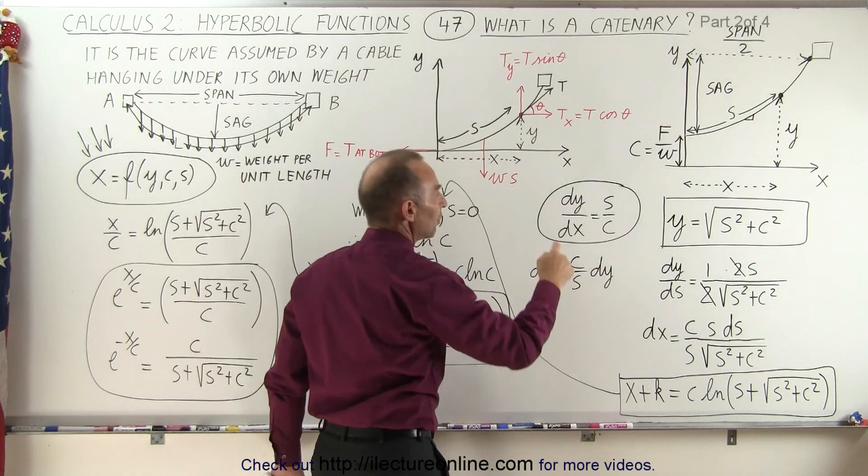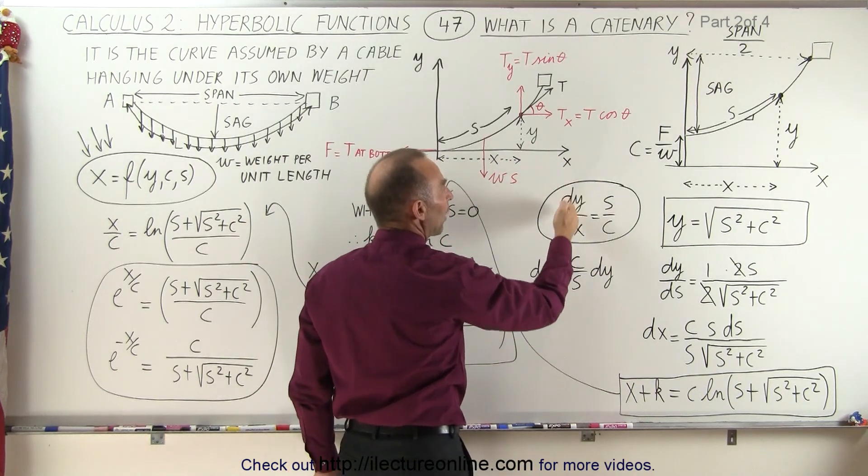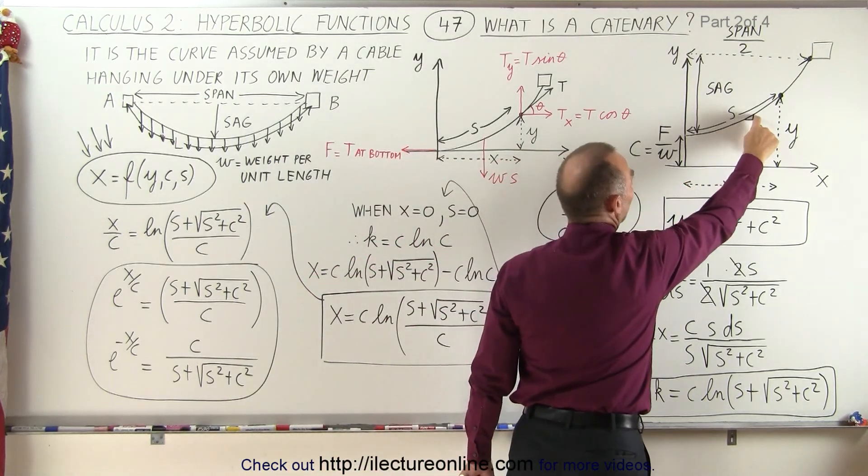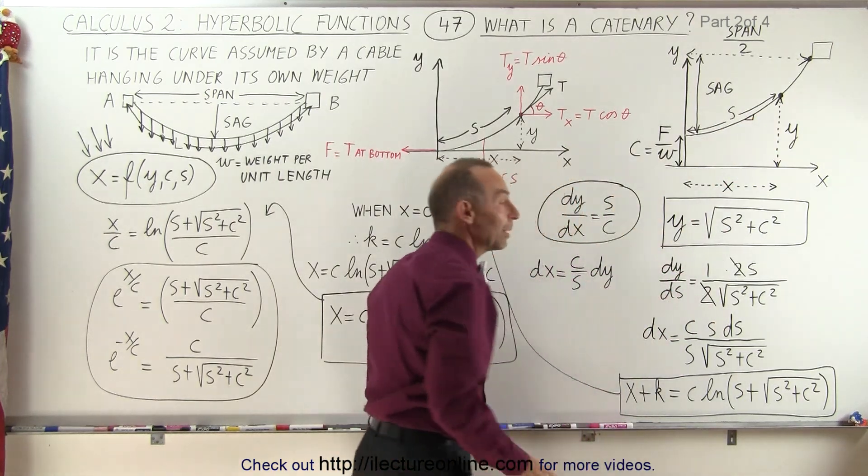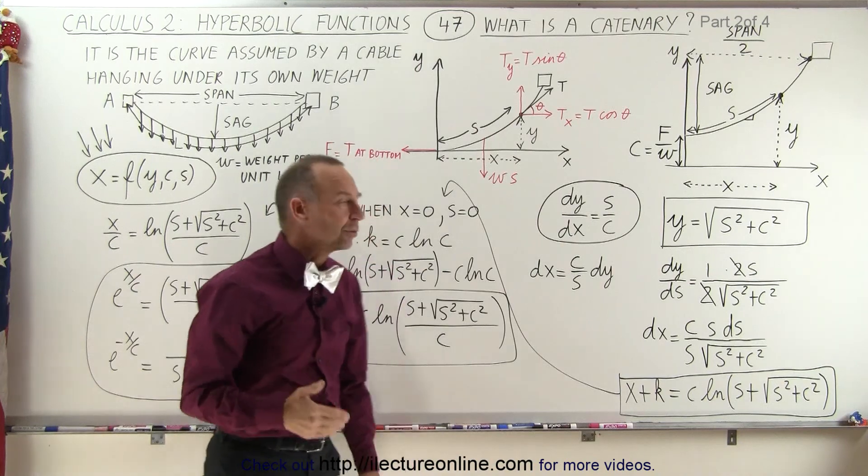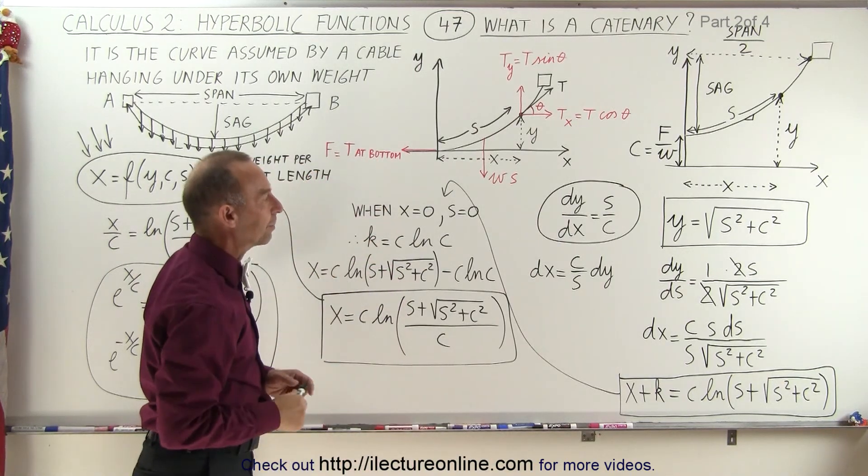We also learned in the previous video that the ratio of dy/dx, which is basically the rise over the run anywhere along that cable, is equal to s over c, because s over c we found was equal to the tangent of the angle at that point.